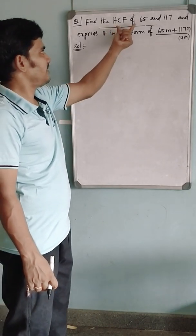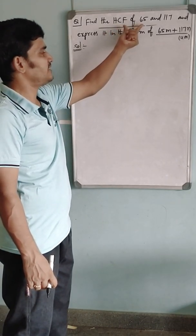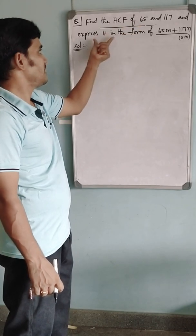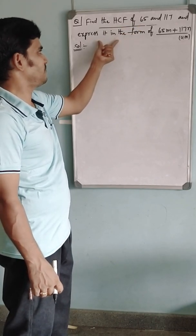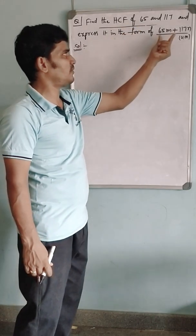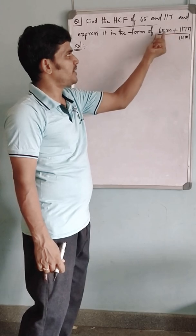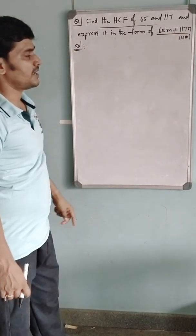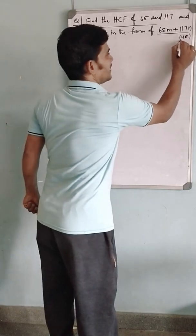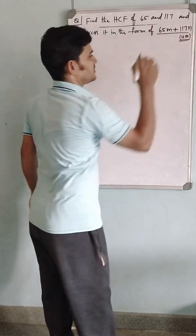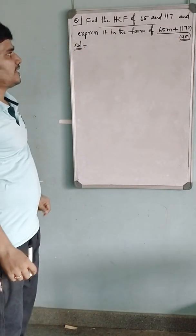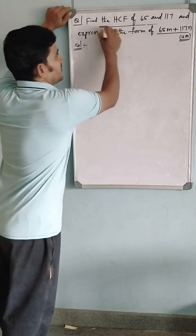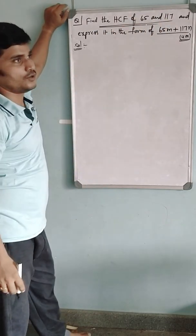If you are given to find only HCF, this is a one mark or two mark process, but to express the HCF in the form of the sum of the multiples of 65 and 117 comes under four marks, because you have to do a little bit of work.